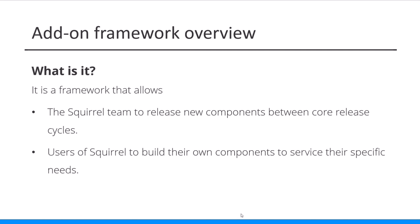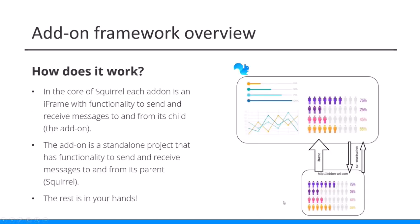We're quite excited to see what our community starts to build with this. How does it work? Very briefly, the core of Squirrel — each add-on is an iframe, and it has the functionality to send and receive messages from Squirrel to the add-on. The add-on itself is a standalone project that has the functionality built into it to send messages from the add-on to Squirrel. It's a completely standalone project, so you can really build whatever you want, just with a common interface that will talk to Squirrel to send and receive messages. Really, the sky's the limit.